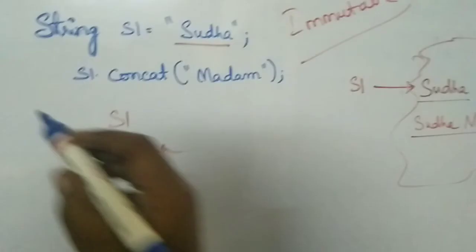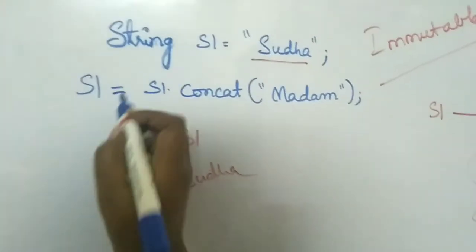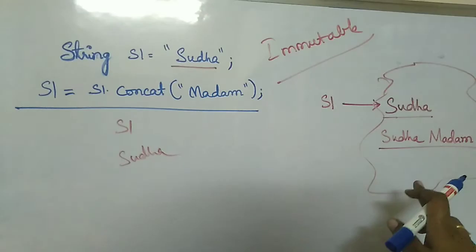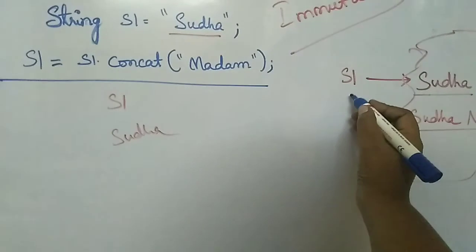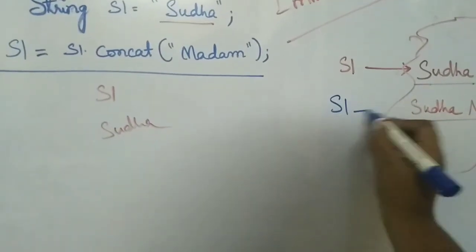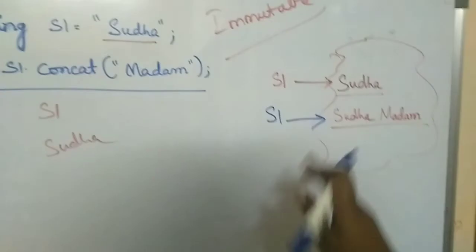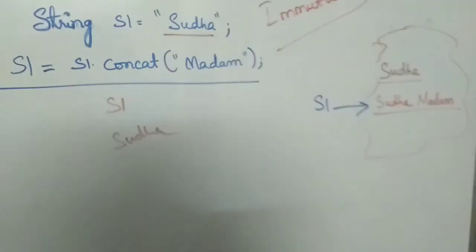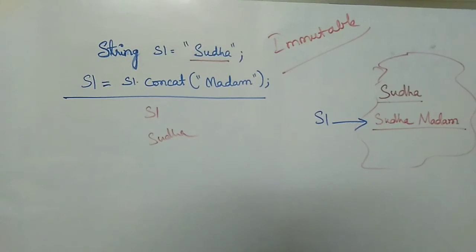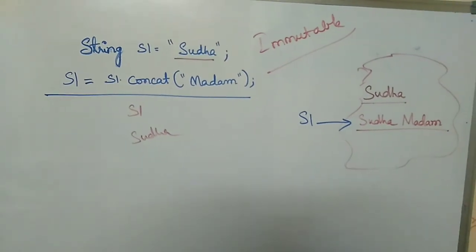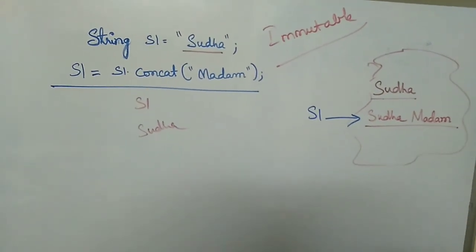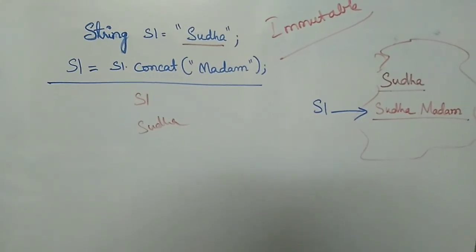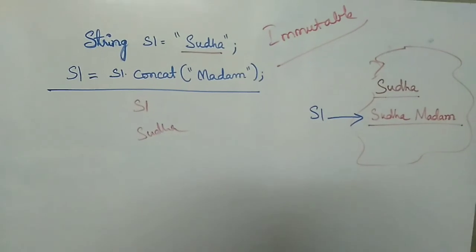If you explicitly write S1 = S1.concatenate('madam'), another string 'Sudha madam' is created and we are asking S1 to point to that new object. So the old reference is gone and S1 now points to 'Sudha madam'. Strings are immutable — every time a new object is created, but no modifications are done to the existing object.